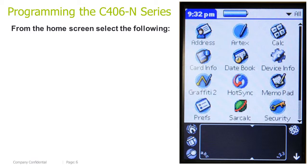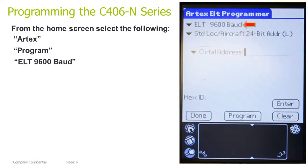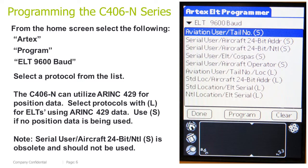Programming the C46-N series ELT. From the home screen, select the following: Artex, Program, ELT 9600 Baud. Select a protocol from the list. The C46-N ELT can utilize ARINC 429 for position data. Select protocols with L for ELTs using ARINC 429 data. Use S if no position data is being used. Note: serial user aircraft 24-bit address national short is obsolete and should not be used.